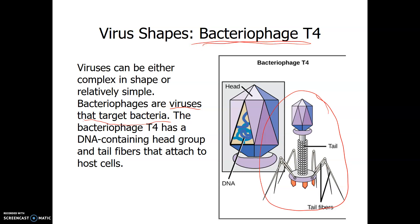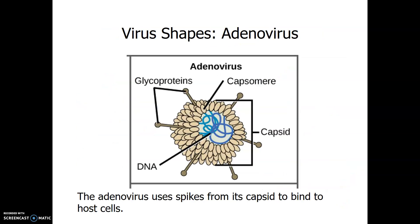Bacteriophage T4 has a DNA-containing head group and tail fibers that attach to host cells. As you can see, the head group contains the DNA surrounded by a capsid, which is a geometrical shape, and then it has a tail with tail fibers that attach to the host — which of course is a bacterium.